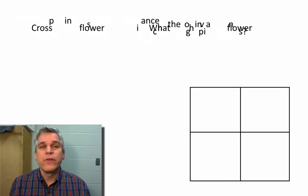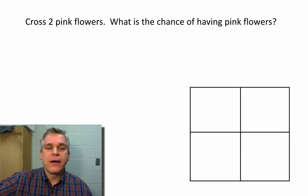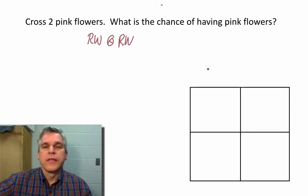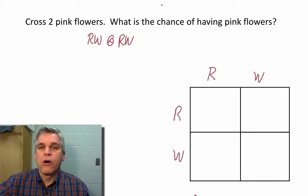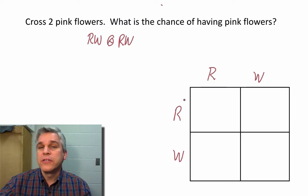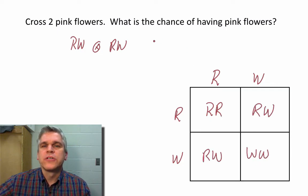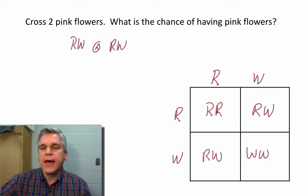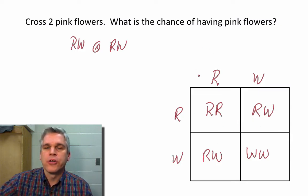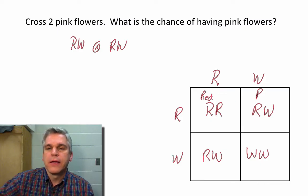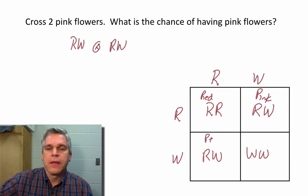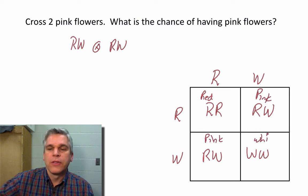Let's look at another example. What if we cross two pink flowers? We're going to take a pink and a pink, take one parent and separate the two alleles, take the other parent and separate the two alleles, and now we'll show all the different possible combinations. Go ahead and do this in your notes, and then answer the following question: what is the chance of having pink flowers? Of the four possible combinations, two of the four are showing pink. We have a red, a pink, a pink, and a white. So the chance of having pink flowers is going to be 50%.